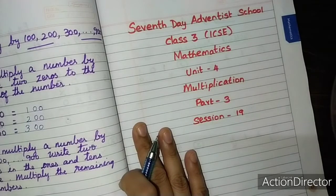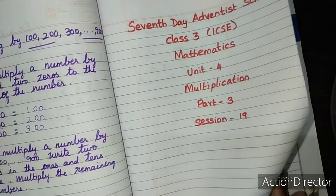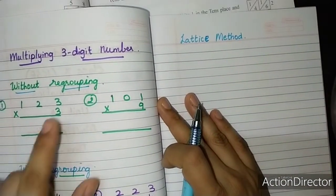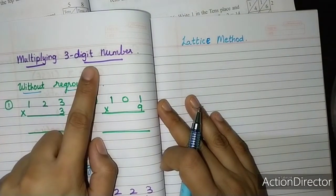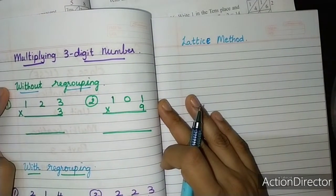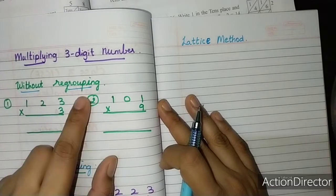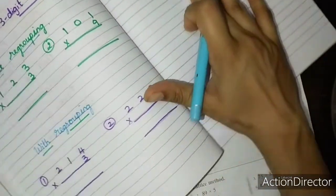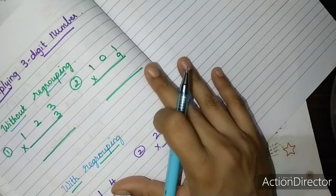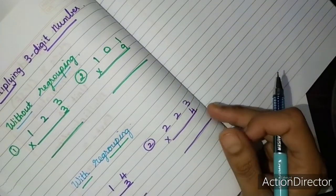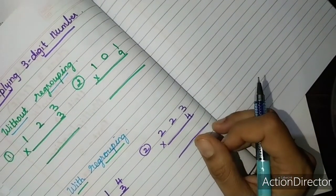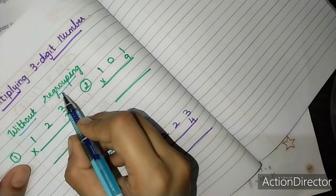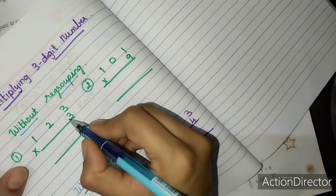Today we are going to learn about multiplication using three-digit numbers — multiplying a three-digit number without regrouping and with regrouping. This is very simple if you know the multiplication tables. First, shall we multiply without regrouping?